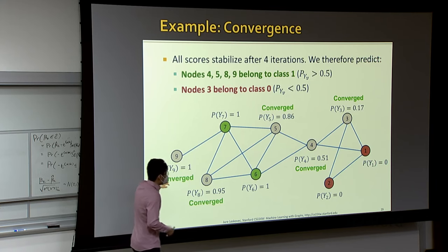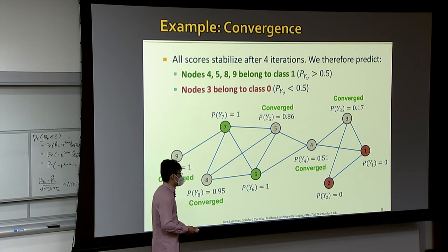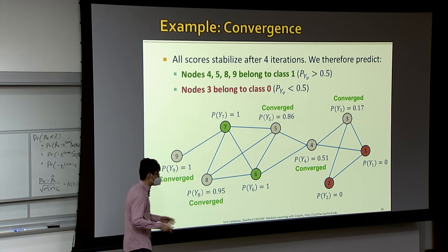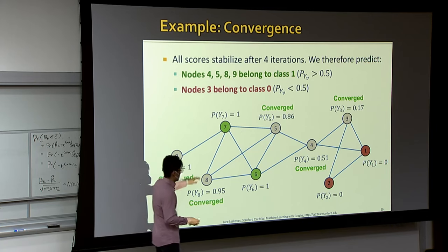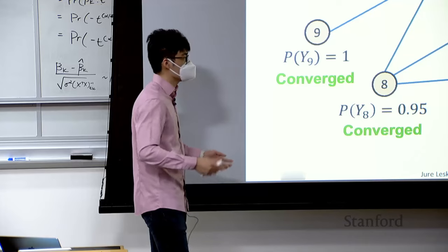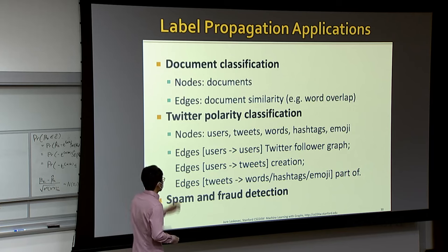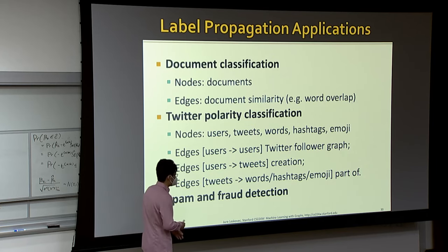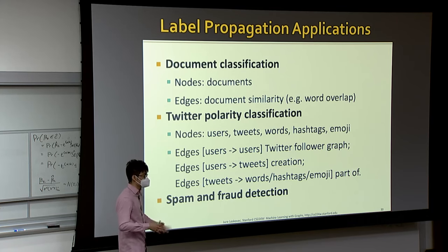We can now label all unlabeled nodes based on the final iteration scores. This algorithm is actually quite simple — it has no trainable parameters, it's not really machine learning, just an algorithm operating on an input graph. But it's very efficient to compute and tends to be useful when the homophily assumption holds. Real applications include document classification where nodes are documents and edges represent similarity between them.